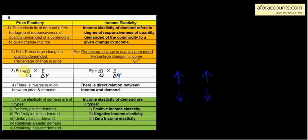To understand the formula: change in quantity demanded is delta Q, upon Q which is the original quantity — the demand that existed before any change in price — multiplied by P (price) upon delta P, that is change in price. For income elasticity: EY = change in quantity demanded upon original quantity, multiplied by income Y upon delta Y, that is change in income.